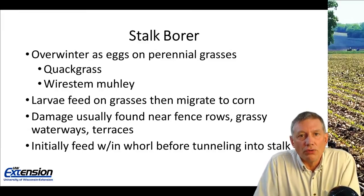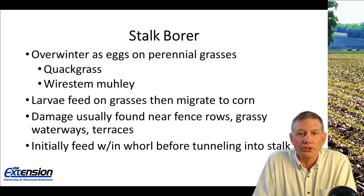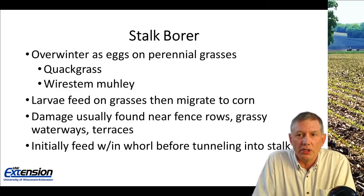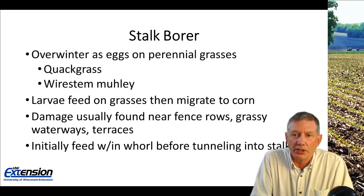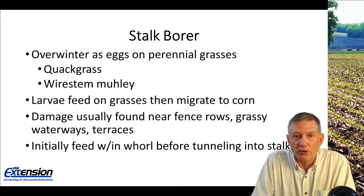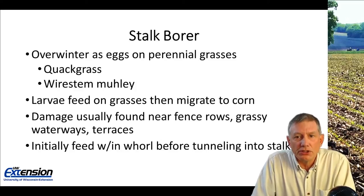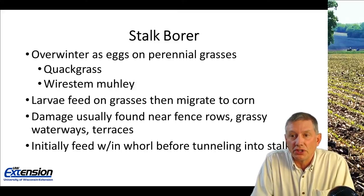Stalk borers overwinter as eggs on perennial grasses — typically quack grass or wire stem muley. In the spring, when the eggs hatch, the larvae will feed on those perennial grasses for a short period of time. Their body gets too large for those grasses and then they migrate to corn. It's during that migration from the grasses to the corn where they're most easily controlled. Usually, that damage is going to be near fence rows, grassy waterways, and terraces.